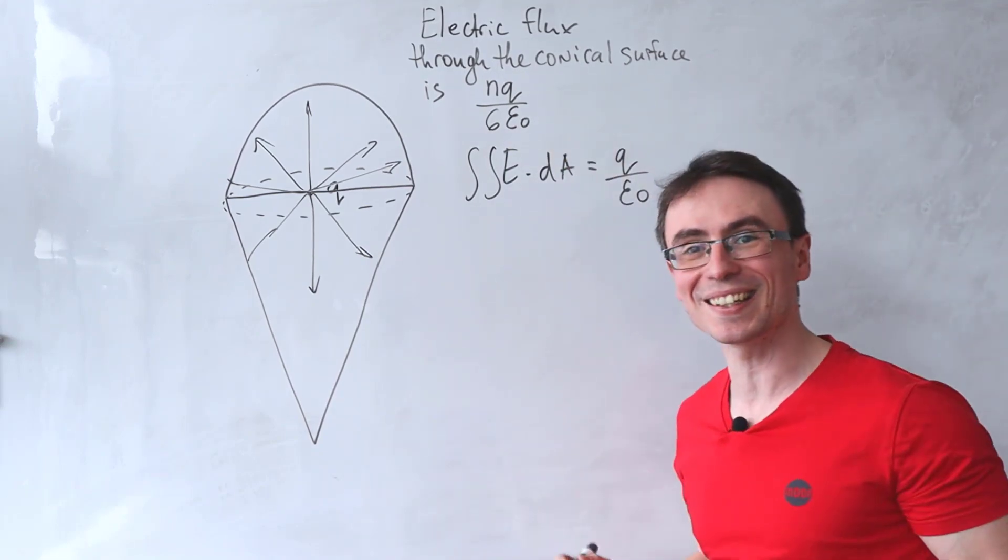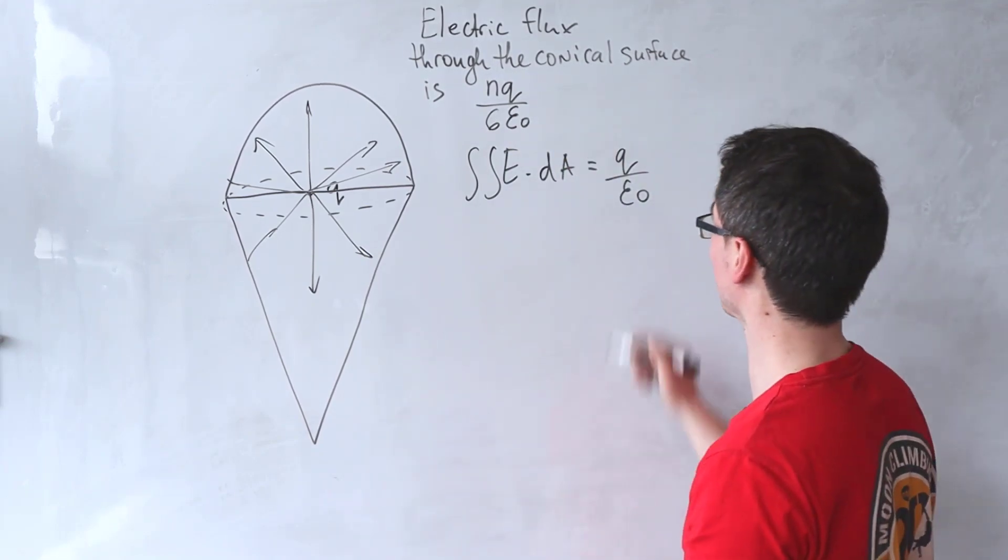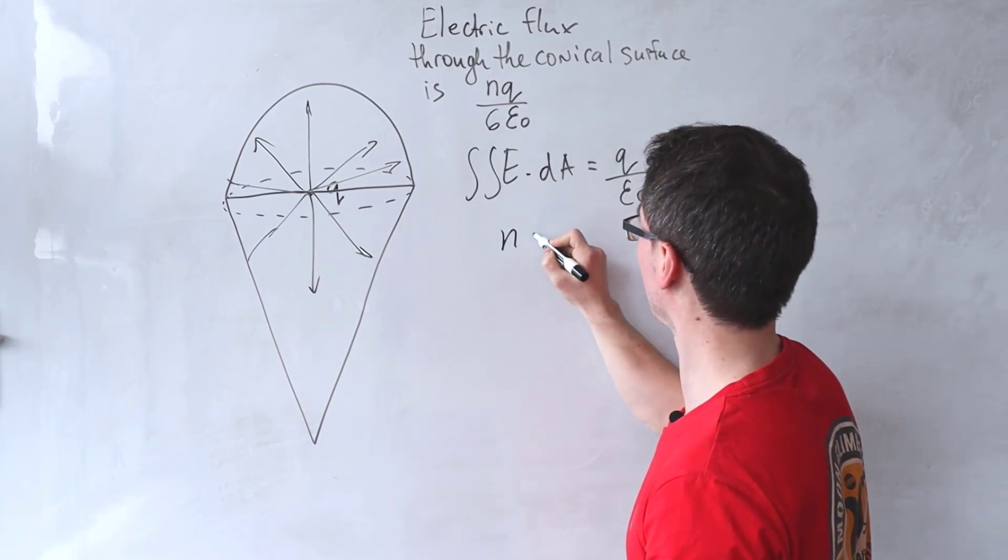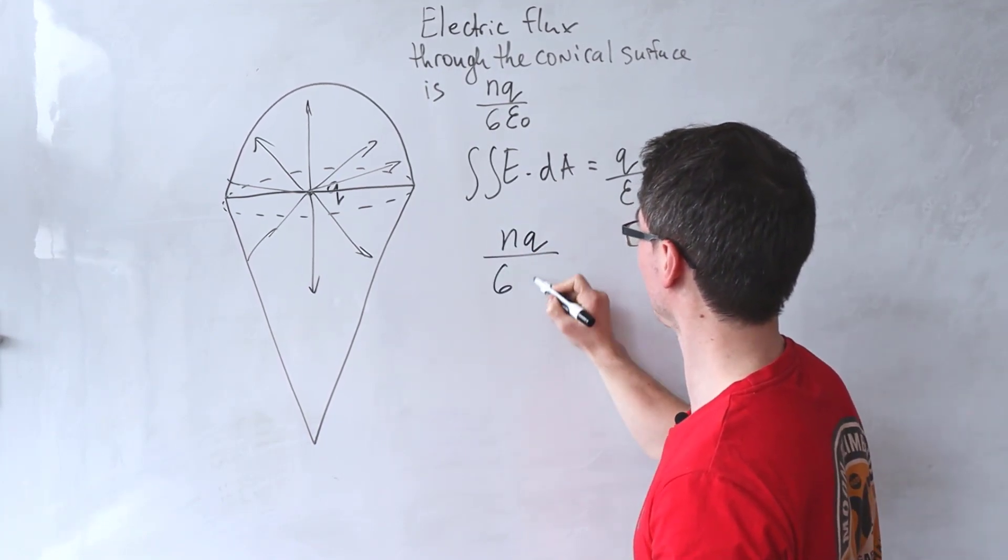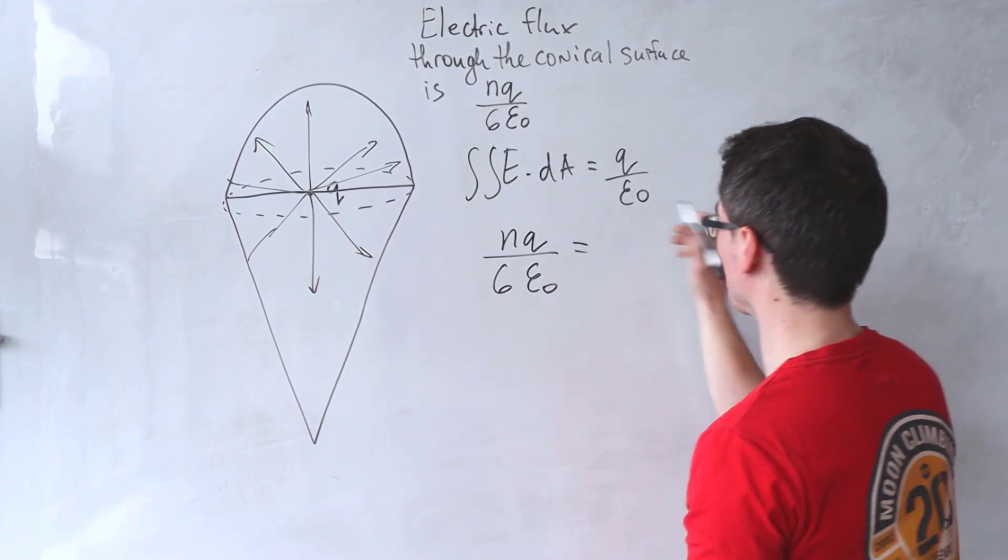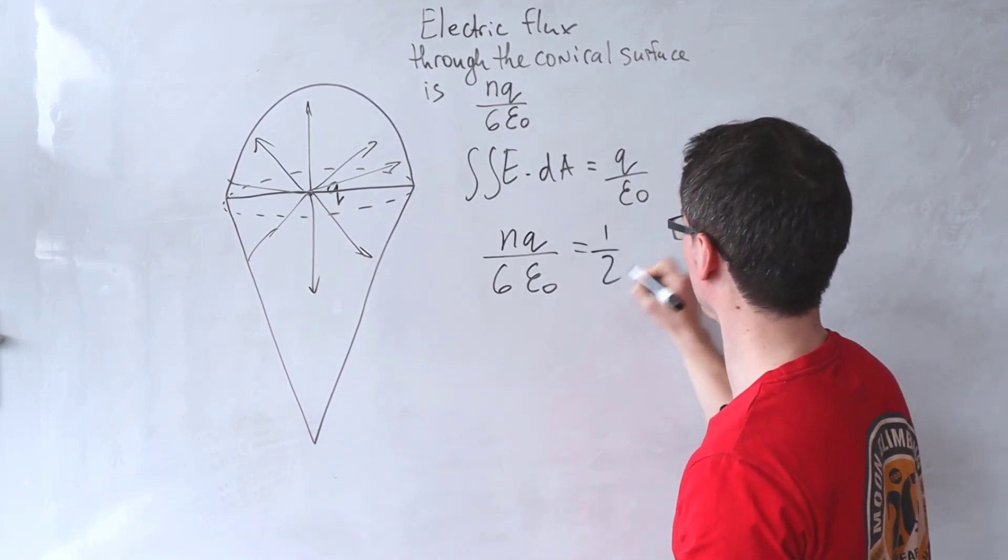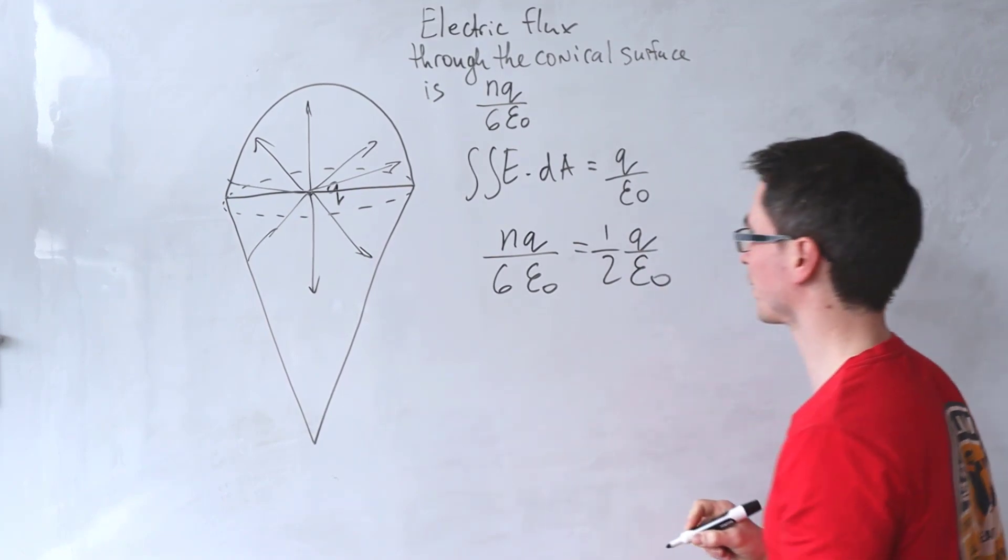This expression here is actually half of the electric flux. That is, we can say that NQ over 6 epsilon naught will be equal to a half Q over epsilon naught.